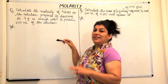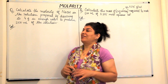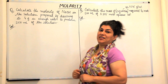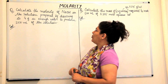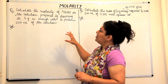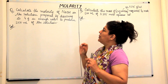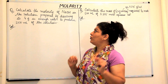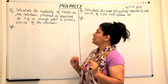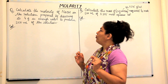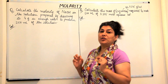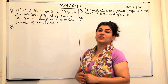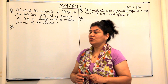Here are two problems that I've planned for today. Calculate the molarity of sodium hydroxide in the solution prepared by dissolving 4 grams in enough water to produce 250 milliliters of the solution.